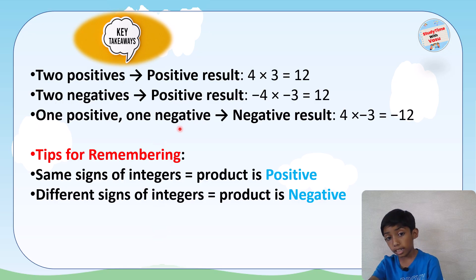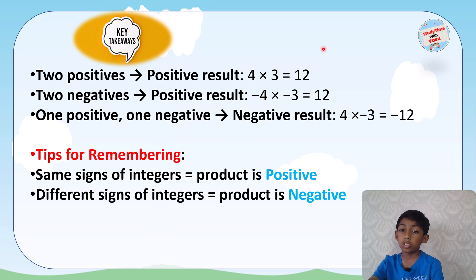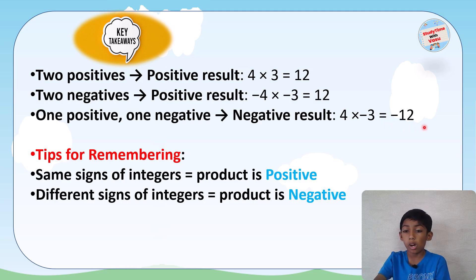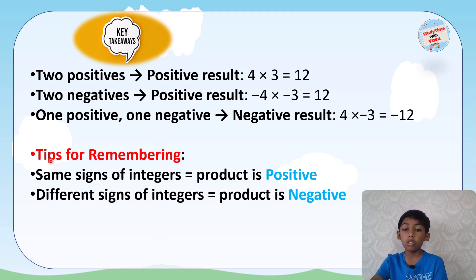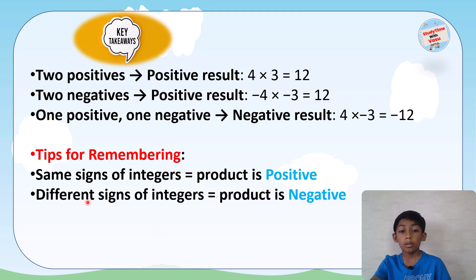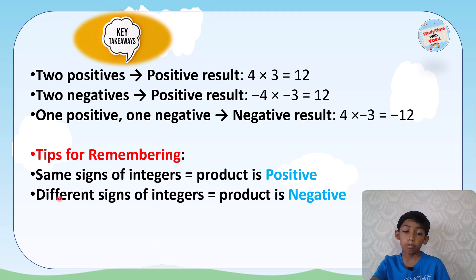One positive and one negative integer multiplied together results in a negative answer — like 4 × (−3) = −12. Here is a tip you can use for remembering: if the signs of the integers are the same, the product is positive; if the signs are different, the product is negative.